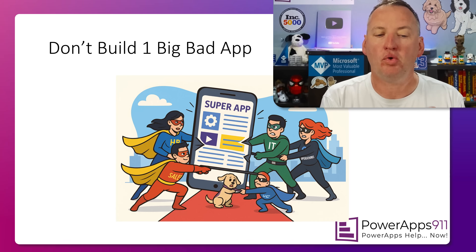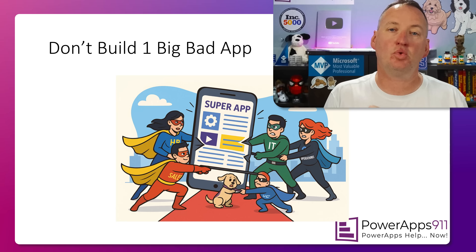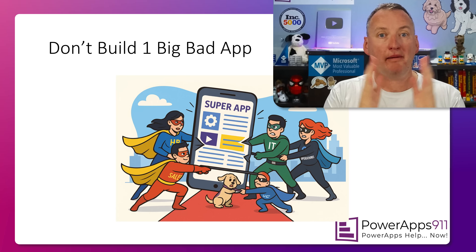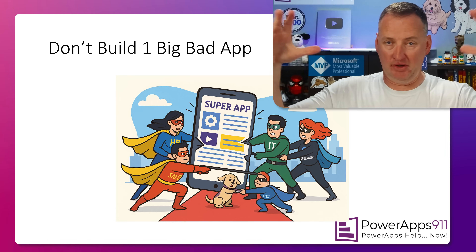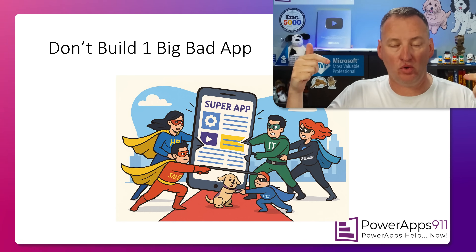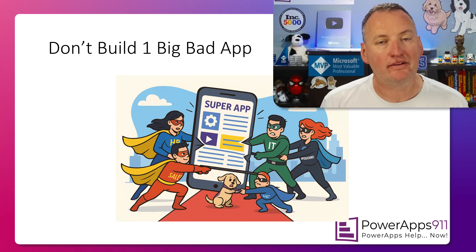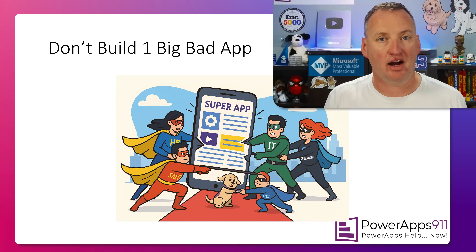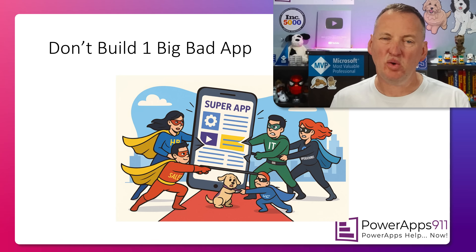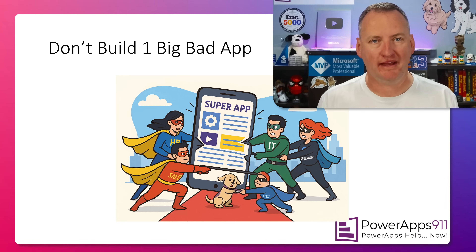But three, the most important reason you don't want to build one big giant app is usability. When you build one app that does everything, you land on the home screen and there are 24 buttons to pick from. You've got to know which button on which screen to get to the place where you can do your job. That means your app is going to need lots of training. We don't want that. What we want is what I refer to as the Hulk smash mentality — I open the app up and it does one thing and it does that one thing really well.